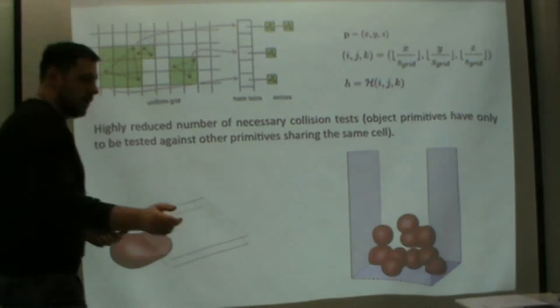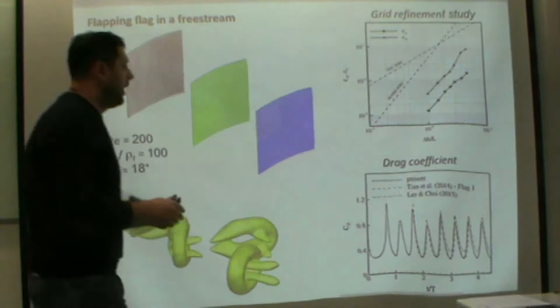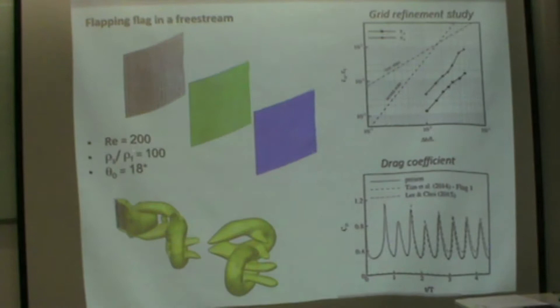We have validated the model in several cases. This is an example of a flapping flag in a free stream at Reynolds number 200. We can see the model recovers second order accuracy both in space and time. This is the drag coefficient in time, very smooth, and there is very good agreement with other approaches in the literature.